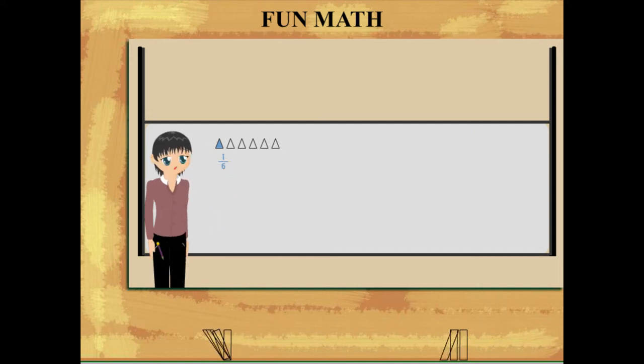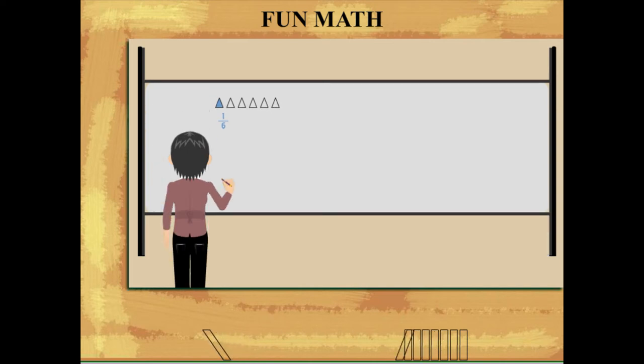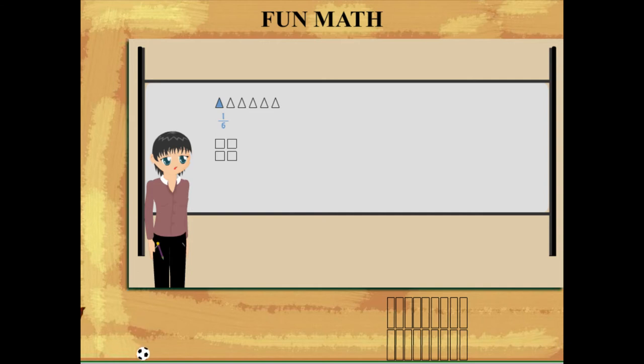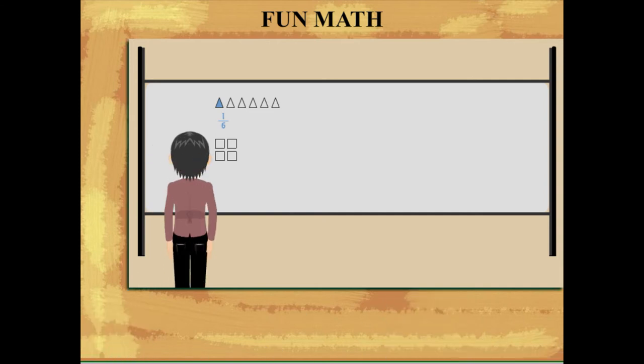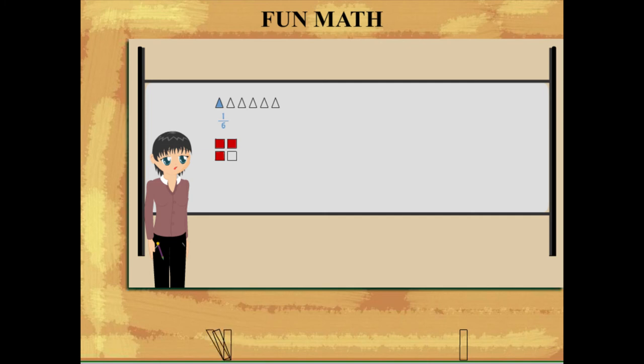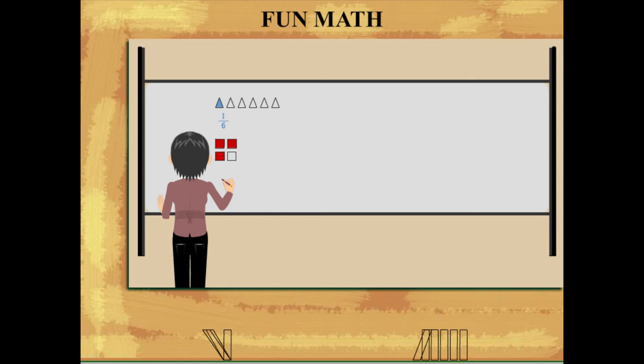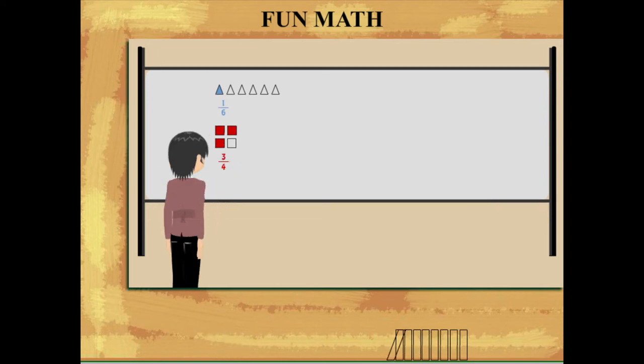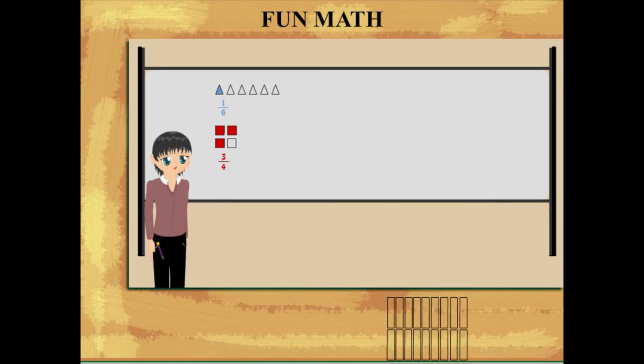Teacher Nancy now draws four squares on the board and tells the class to follow closely. She colors three squares red and asks the class. Nancy ma'am writes the fraction as three upon four, or three parts out of four.